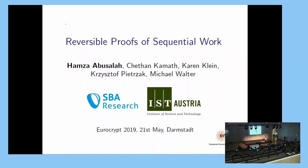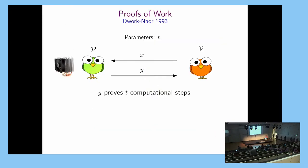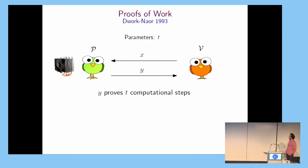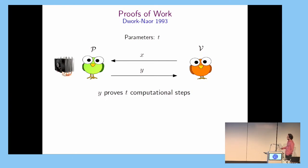I'll be talking for the most part about proofs of sequential work, and then towards the end I will talk a bit about its reversibility and its added value. We could start by talking about proofs of work. These are interactive proof systems at the end of which the verifier gets convinced that the prover did some t computational steps.